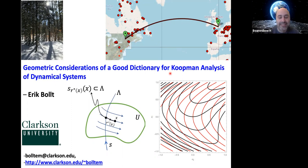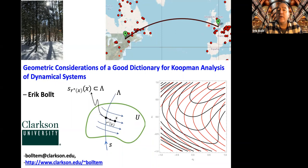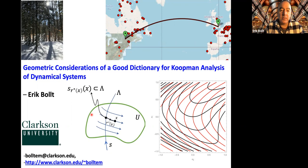So a little map of where I am. If you want to come to me, you fly across the ocean. I'm right where the dot is — way upstate New York; New York City is way down here. So actually, there are two parts to this talk. The first part is what Hamzi asked about: the Geometric Considerations of Good Dictionary for Koopman.